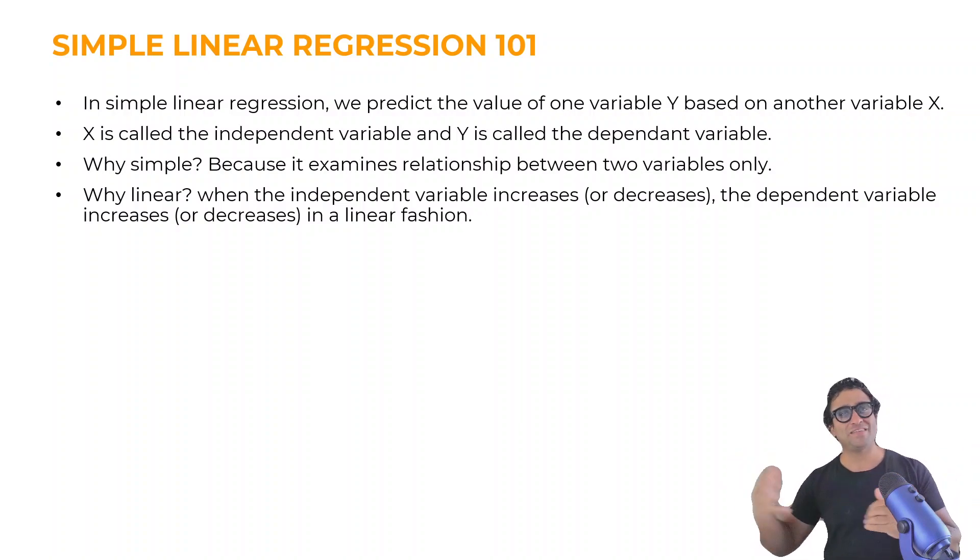In the next couple of lessons, we are going to learn about multiple linear regression. That's when we have more than one variable that we're trying to relate together. So the next question is, why do we call it linear? Well, we call it linear because when the independent variable increases or decreases, you will notice that the dependent variable increases or decreases in a linear fashion. And that's why we call it simple, and that's why we call it linear. And that's where the term simple linear regression comes into play.